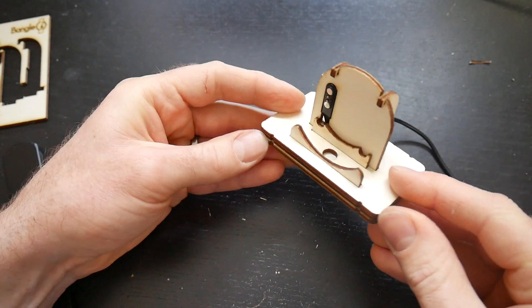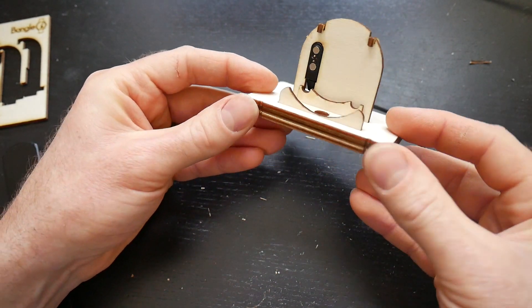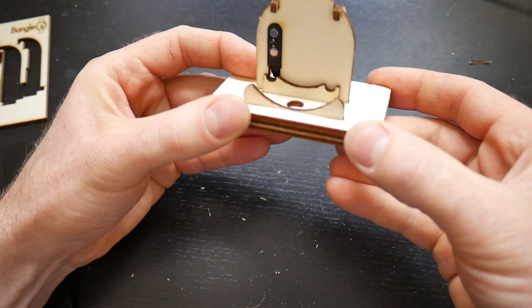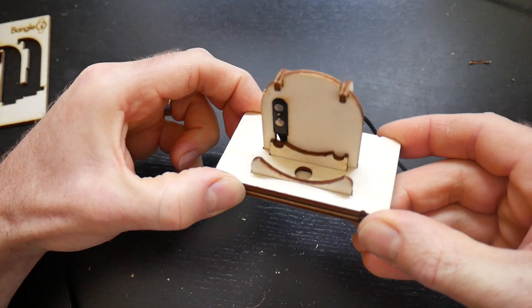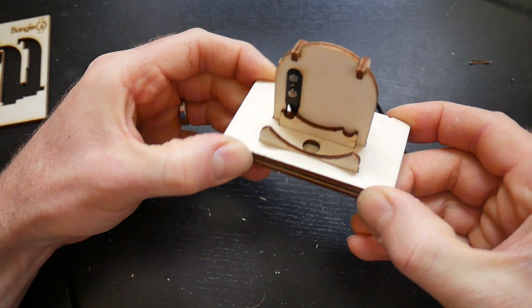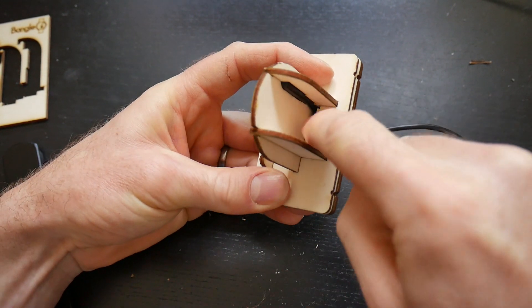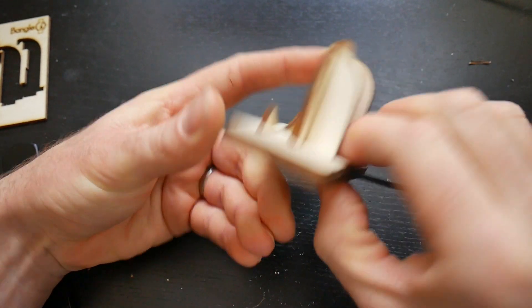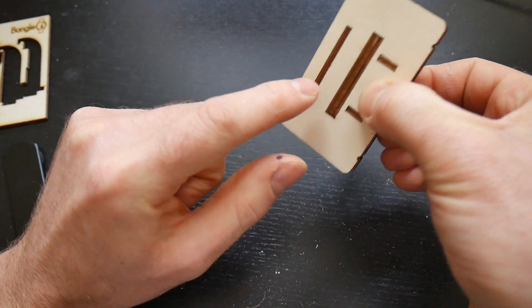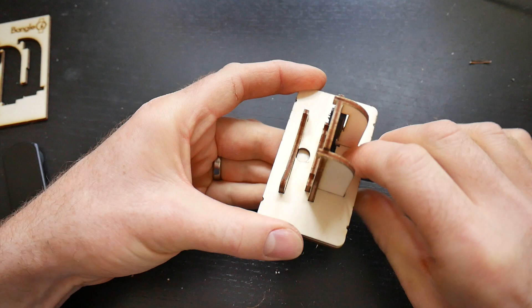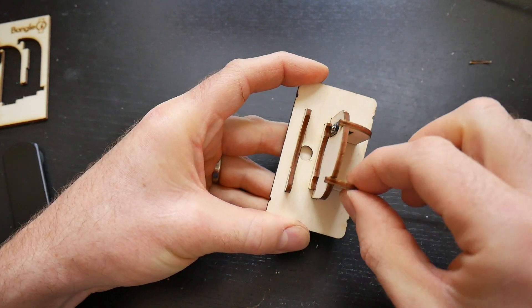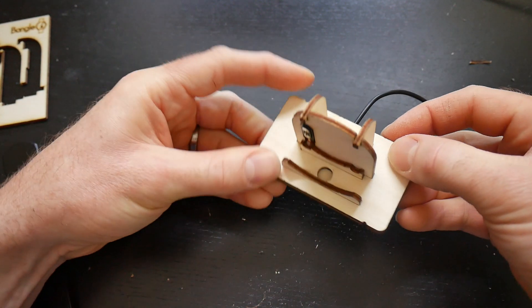And when that's in, the cable's clamped in and you have your Bangle.js charge cradle. Now we'd recommend that you just put the elastic bands around there and there to hold this all nice and straight. You can also just put a little dab of super glue in there and around here. Flip it over and super glue in there, there, there and there just to hold everything in really solidly. But even without that, it still holds everything quite nicely.